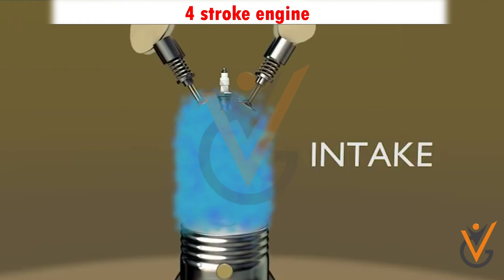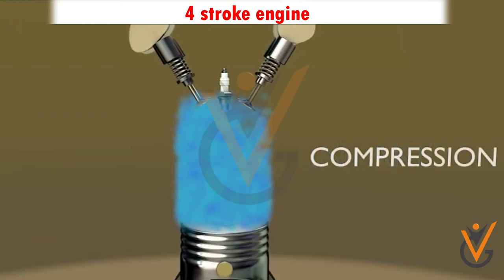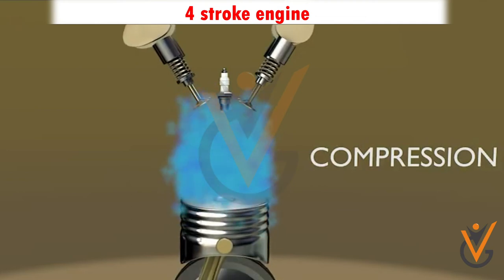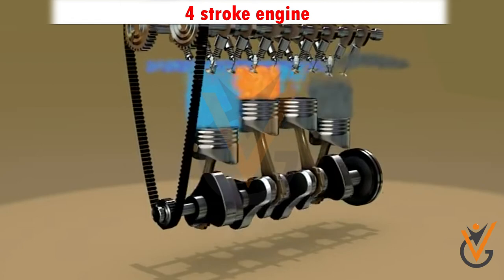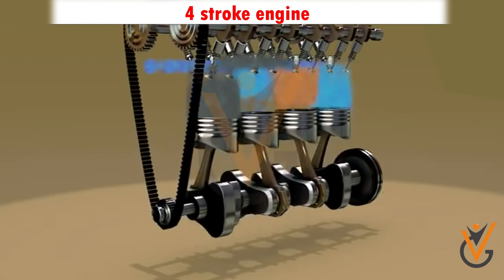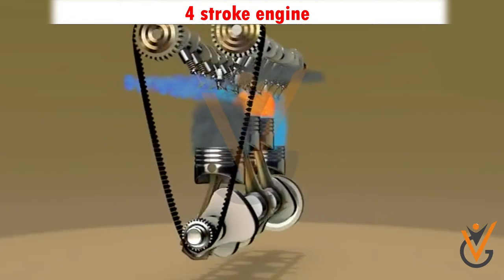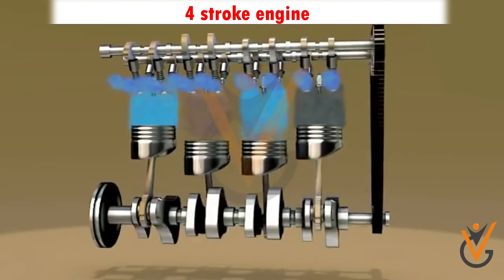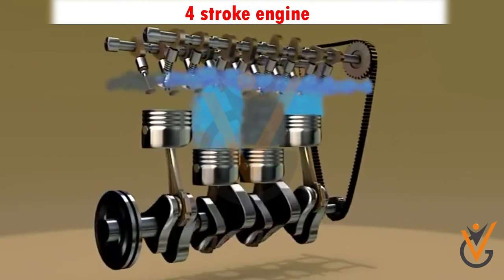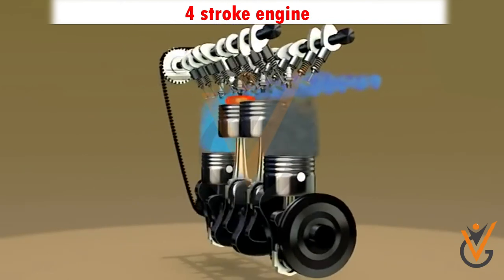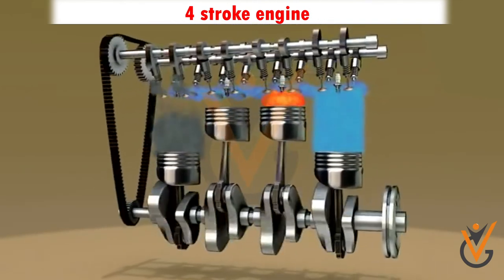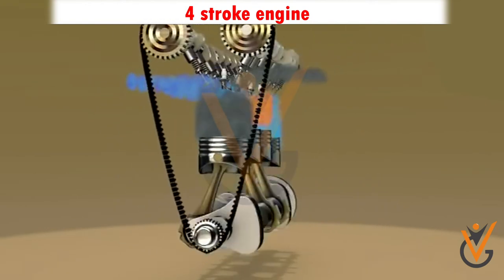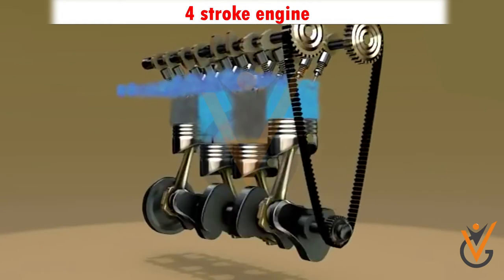An inlet valve and an exhaust valve are fitted on top of the cylinder head to draw in fresh air and to expel used exhaust gas. Both the valves and the fuel pump, which supplies fuel to the injector, are operated using a camshaft driven by the crankshaft via a gear drive. In a four-stroke engine, the camshaft runs at half the speed of the crankshaft. The crankcase is open to the piston-liner arrangement, which assists in lubrication of the liner.